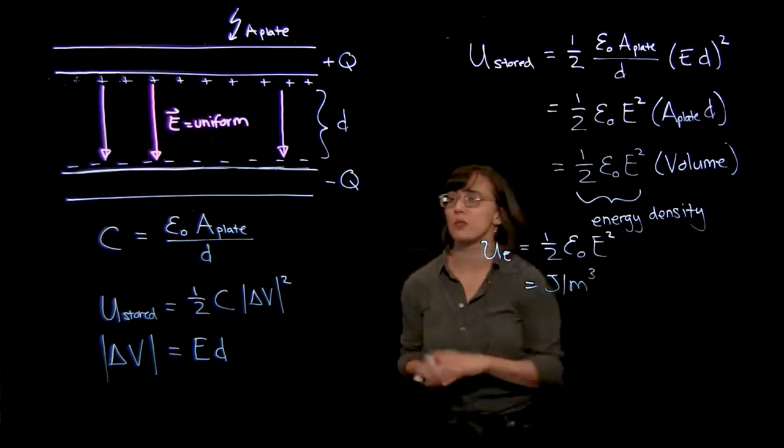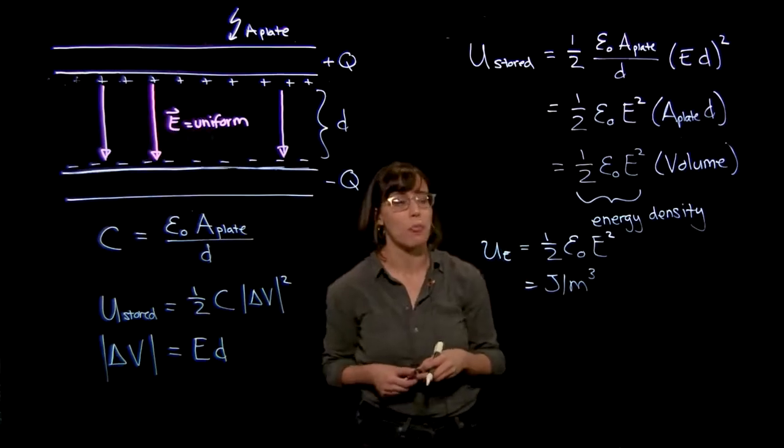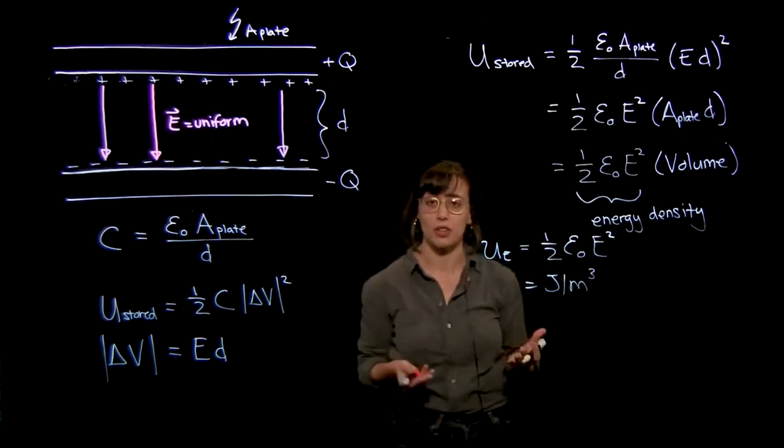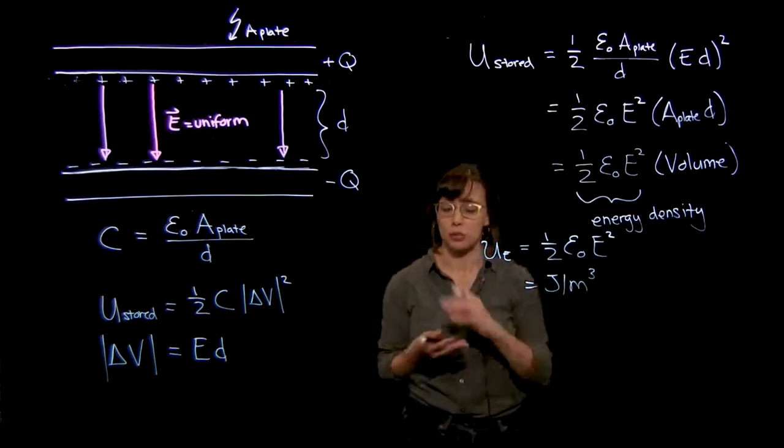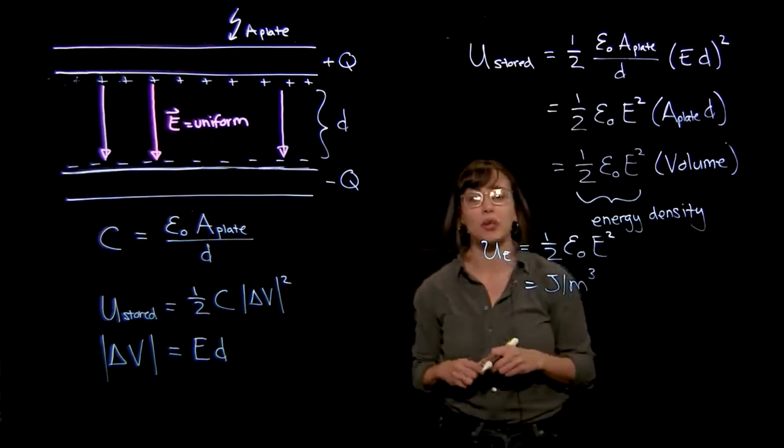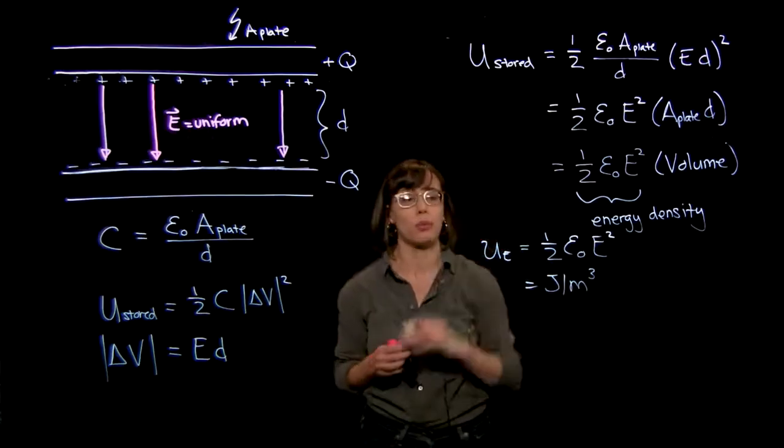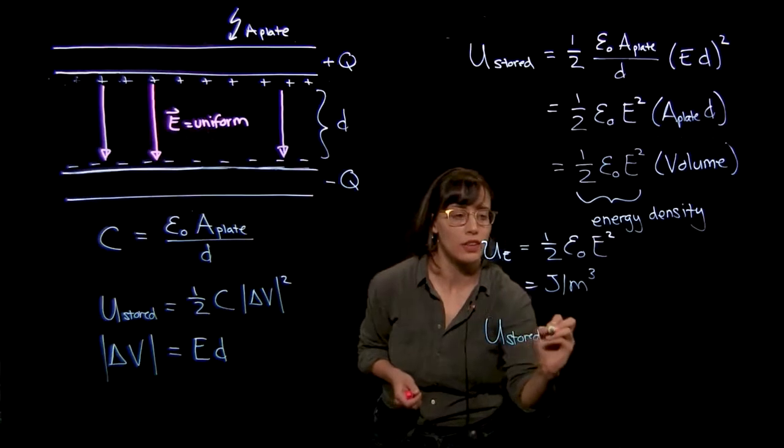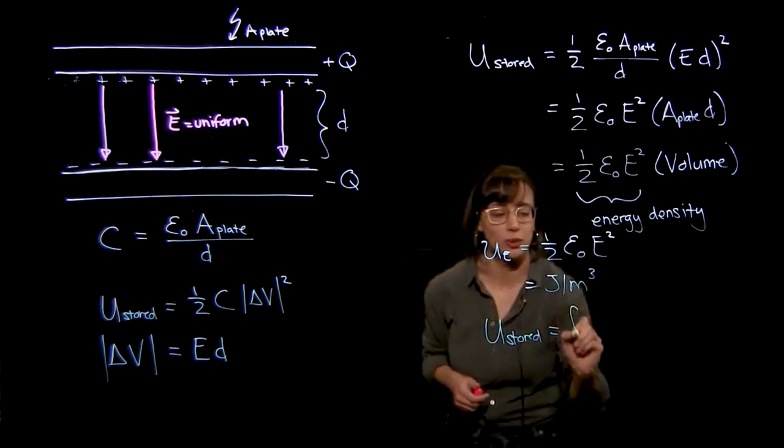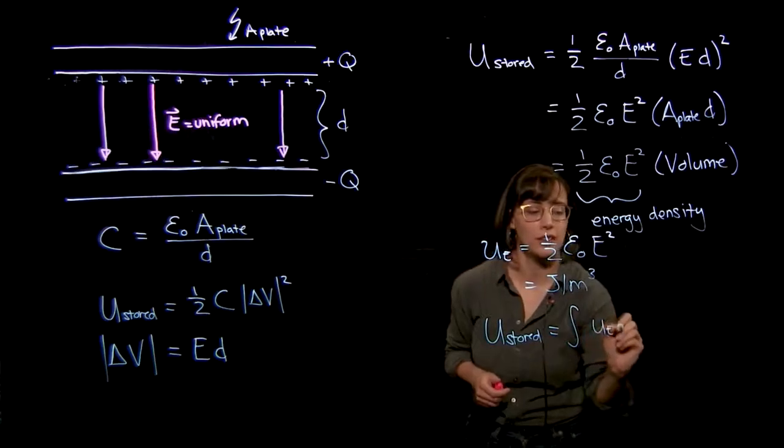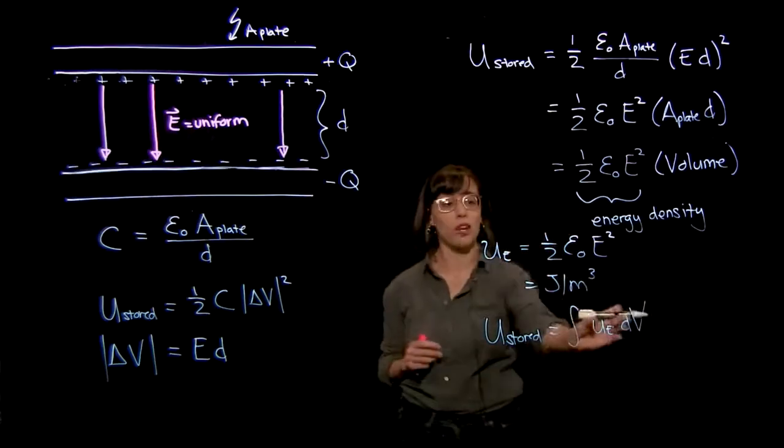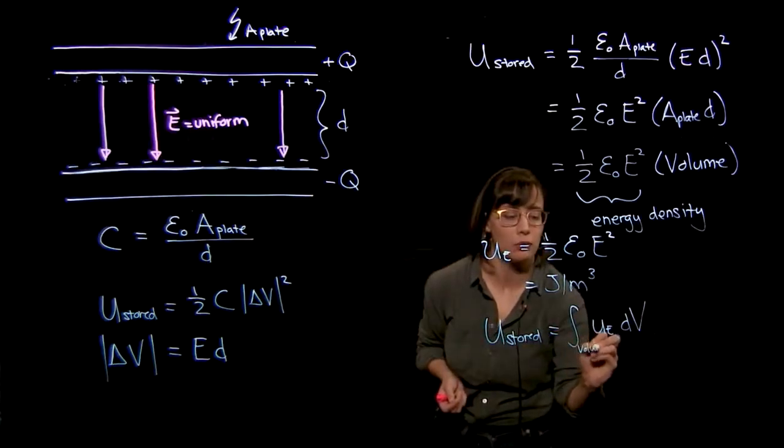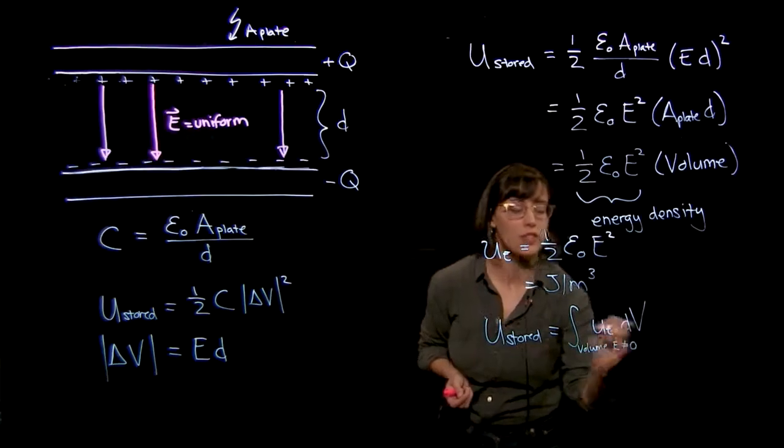Now everything I've done so far is for this very particular case of a parallel plate capacitor. But what you can actually derive is that this expression, this energy density, is generically true for any capacitor that we want to define. You can think of the example we did where we did two spherical shells as a capacitor. So in general, if you want to find the energy stored in your capacitor for any generic geometry, you would say that the energy stored is equal to the integral of this energy density times the volume. And let's stop and think what volume we're integrating over. You want to integrate over the volume where the electric field is non-zero.